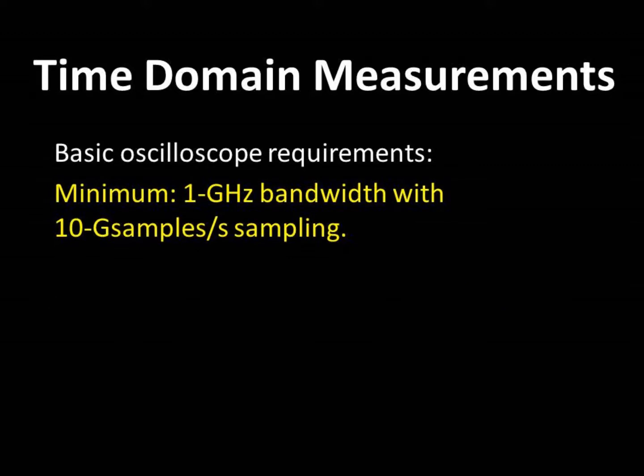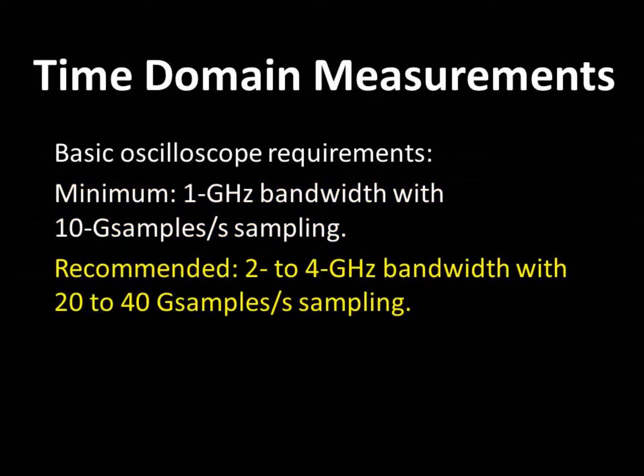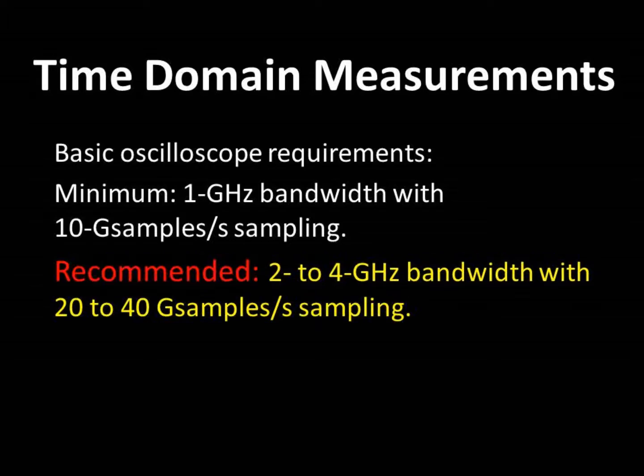The bandwidth required today for measuring power supply waveforms is 1 GHz with a 10 GHz sampling rate, but those figures represent the absolute minimums. If you're buying a new scope and you want it to last a few years, then an instrument with 2 to 4 GHz bandwidth and 20 to 40 GHz samples per second is strongly recommended.